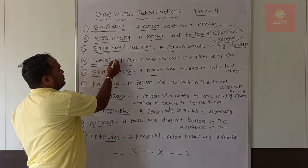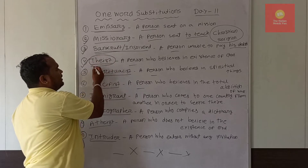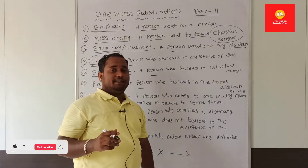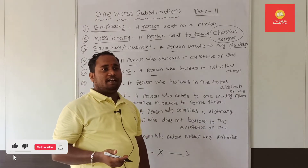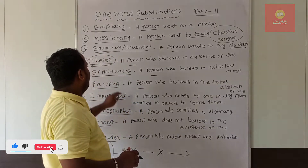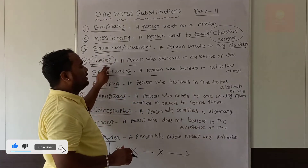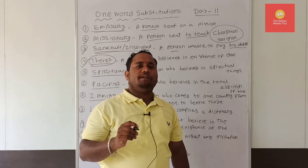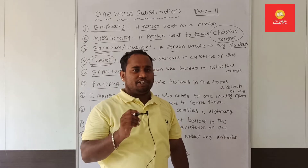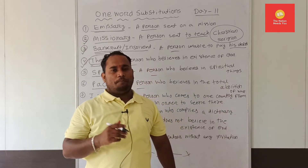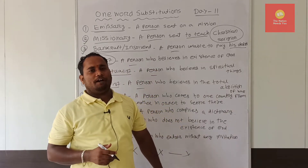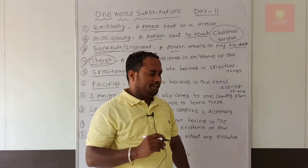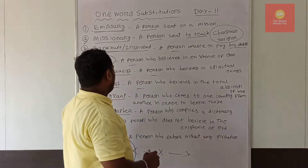One more word: 'theist.' If you add 'A' before it you get 'atheist,' but 'theist' means a person who believes in the existence of God — someone who believes God exists. So that person is called a theist.